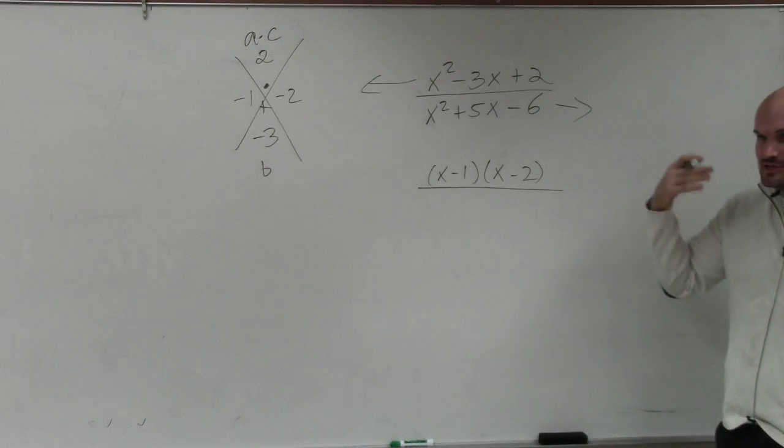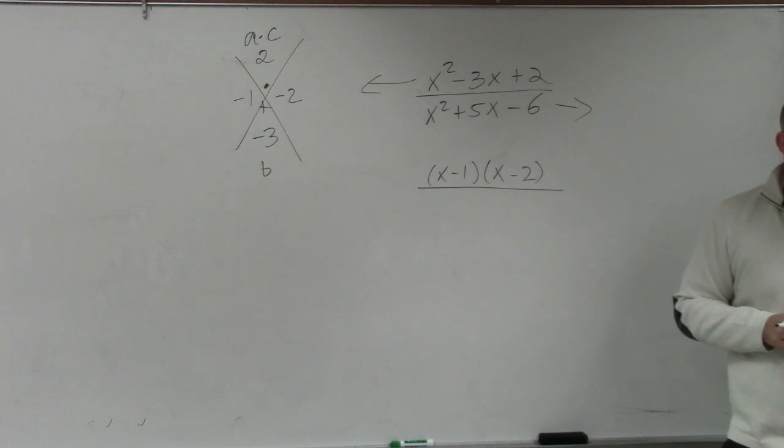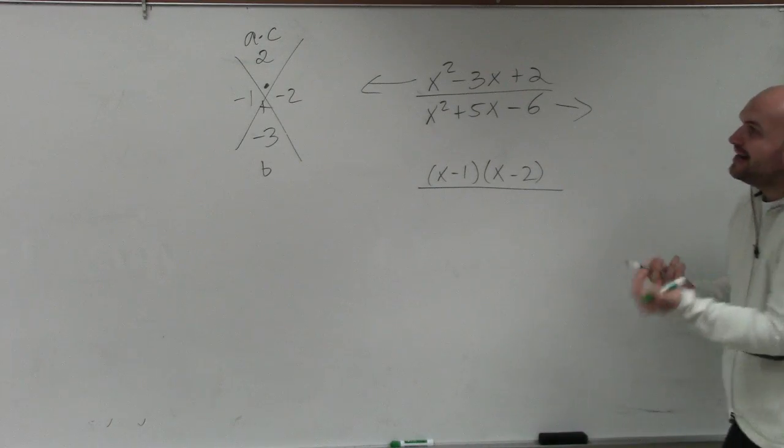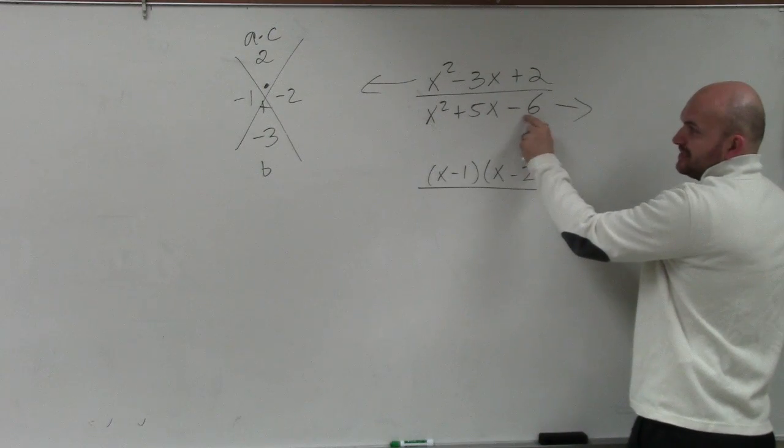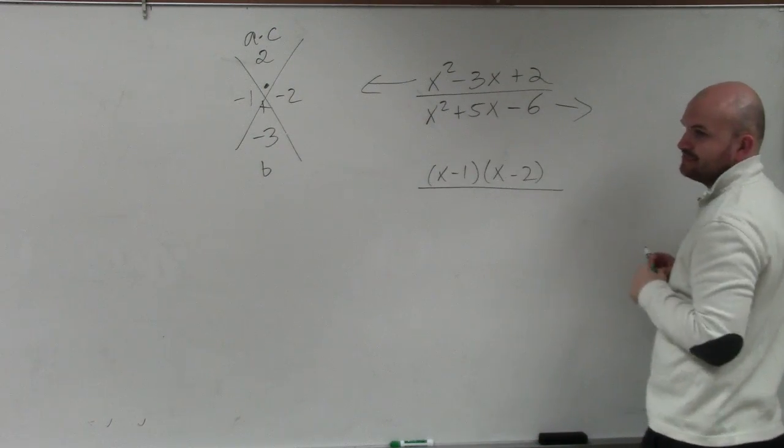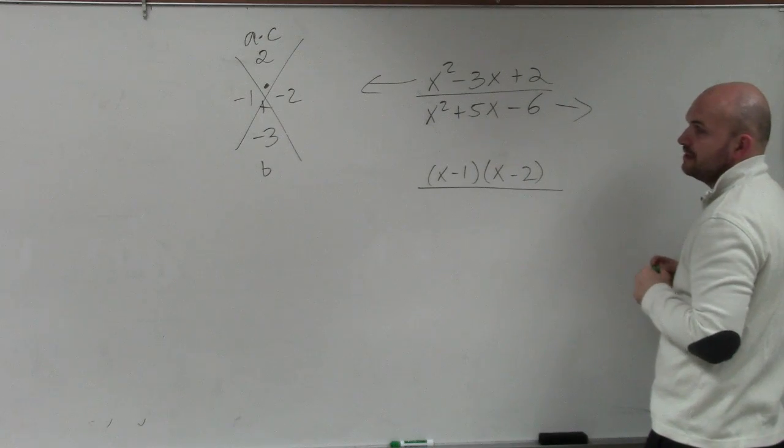On this one, I'm going to start doing this in my head to kind of help you guys out as far as what I'm thinking. Again, basically what I'm doing is, since a is 1, I'm thinking, what two numbers multiply to give me negative 6, but then add to give me positive 5? Well, obviously,